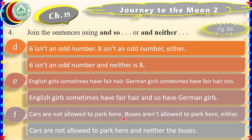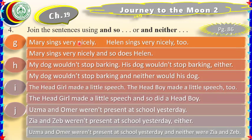Part F: 'Cars are not allowed to park here. Buses are not allowed to park here either.' Answer: 'Cars are not allowed to park here and neither are the buses.' Part G: 'Mary sings very nicely. Helen sings very nicely too.' Answer: 'Mary sings very nicely and so does Helen.' Part H: 'My dog wouldn't stop barking. His dog wouldn't stop barking either.' Answer: 'My dog wouldn't stop barking and neither would his dog.' Part I: 'The head girl made a little speech. The head boy made a little speech too.' Answer: 'The head girl made a little speech and so did the head boy.' Part J: 'Uzma and Umar weren't present at school yesterday. Ziya and Zeb weren't present yesterday.' Answer: 'Uzma and Umar weren't present at school yesterday and neither were Ziya and Zeb.'